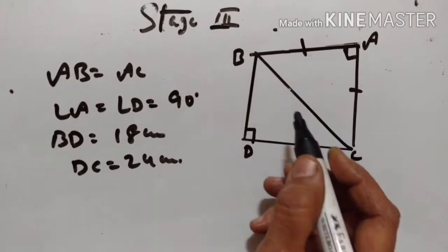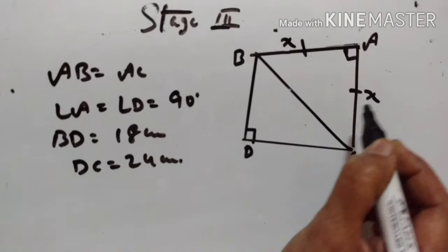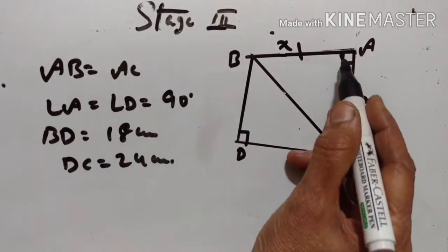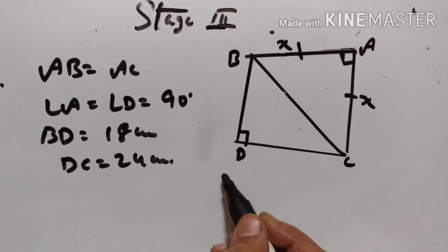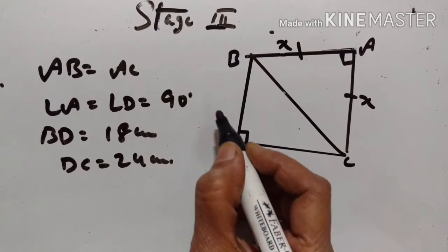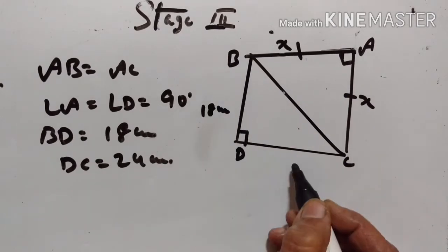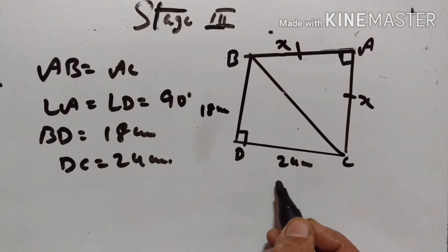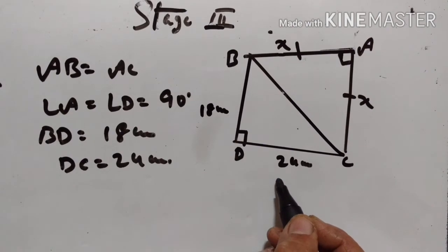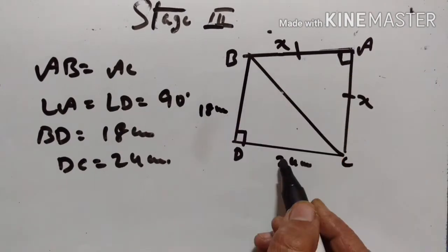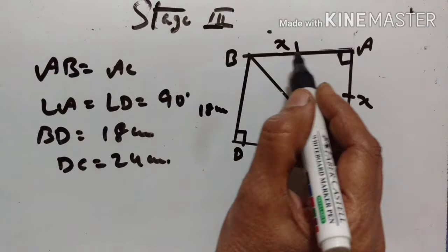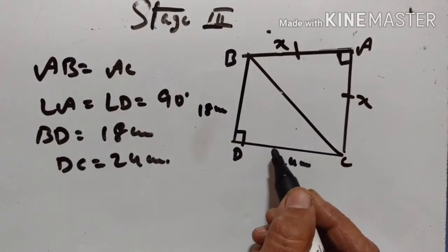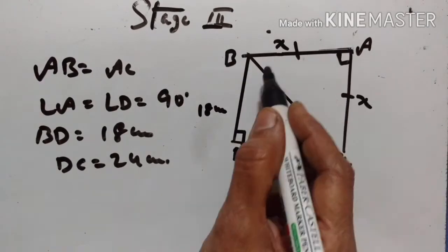AB is equal to AC, let them be X and X. Angle A is equal to angle D is equal to 90 degrees. BD is equal to 18 centimeters, DC is equal to 24 centimeters. We have to find the length of AB correct to two decimal places, and also find the perimeter of quadrilateral ABCD.